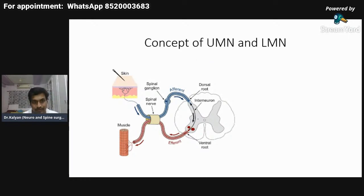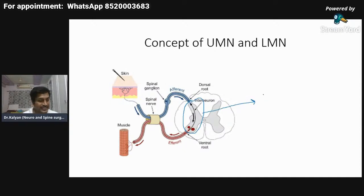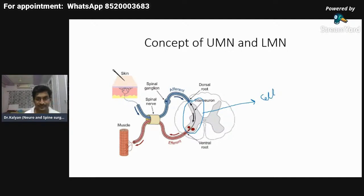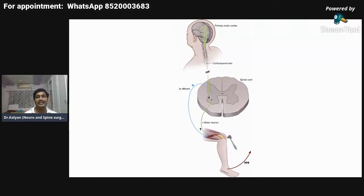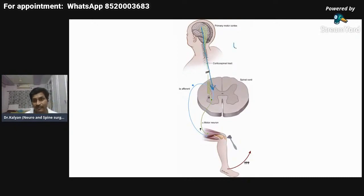The gray matter of the spinal cord contains the cell bodies of the neurons. Any nerve involved in the reflex arc — the anterior nerve root, interneurons, and posterior nerve root — is the lower motor neuron (LMN). The upper motor neurons (UMN) are the neurons in the tracts — pyramidal, dorsal, and spinothalamic — which descend from the brain and influence the reflex arc.